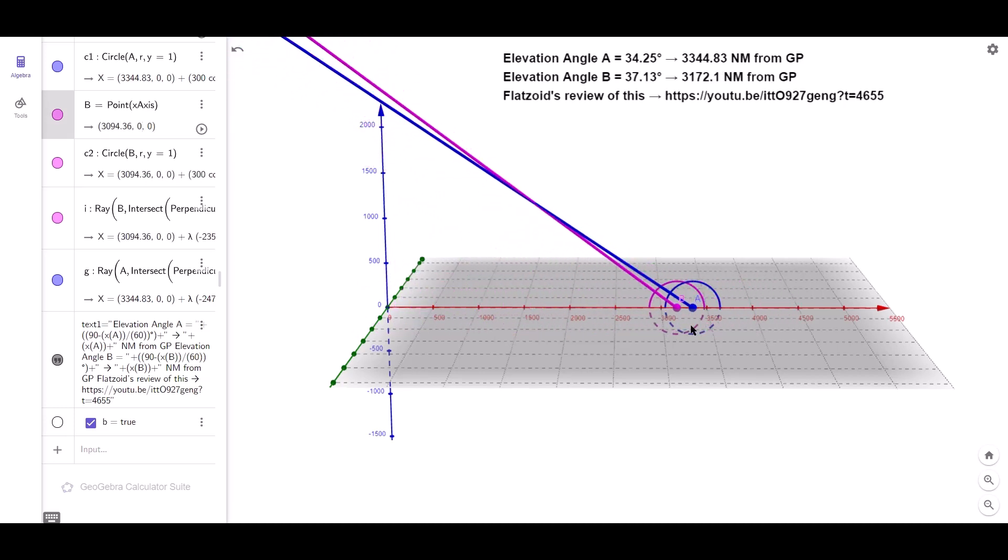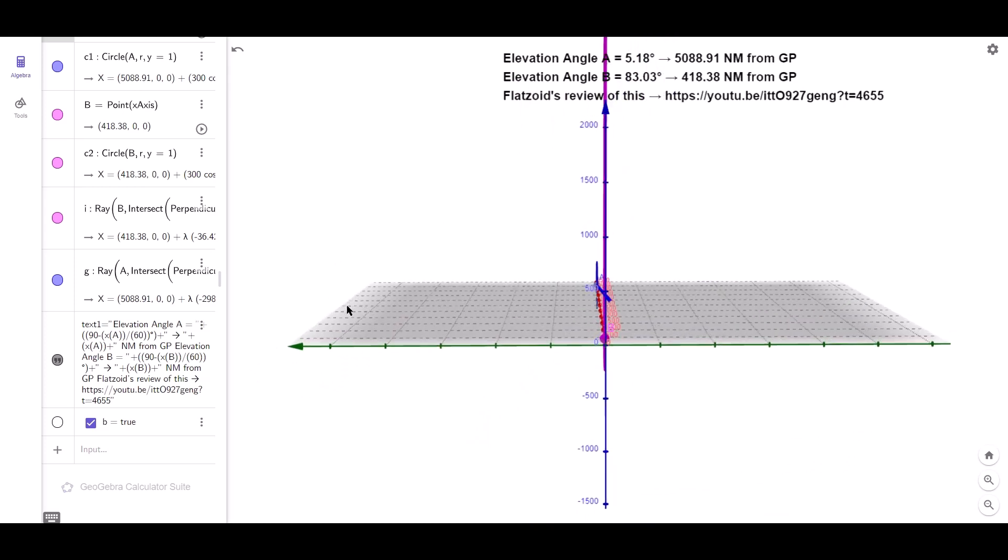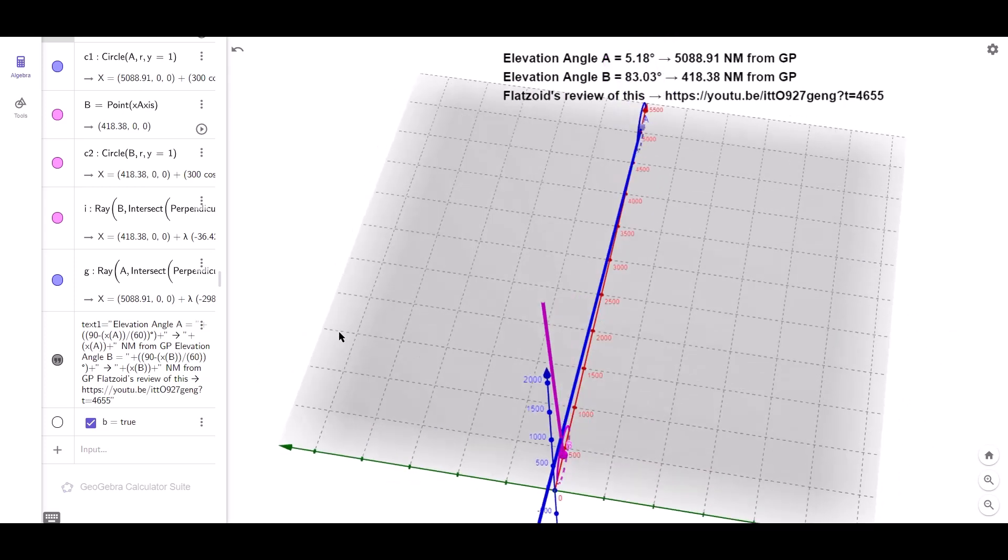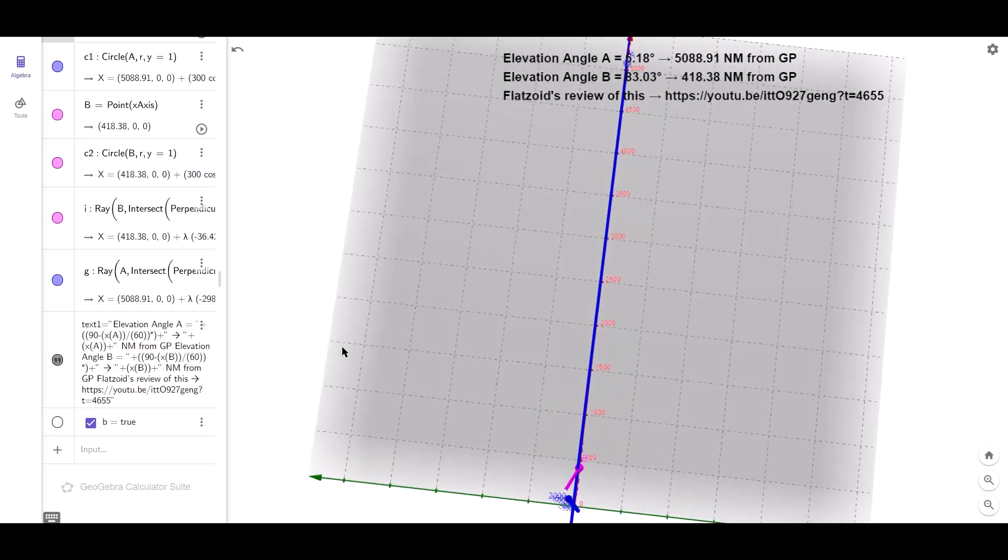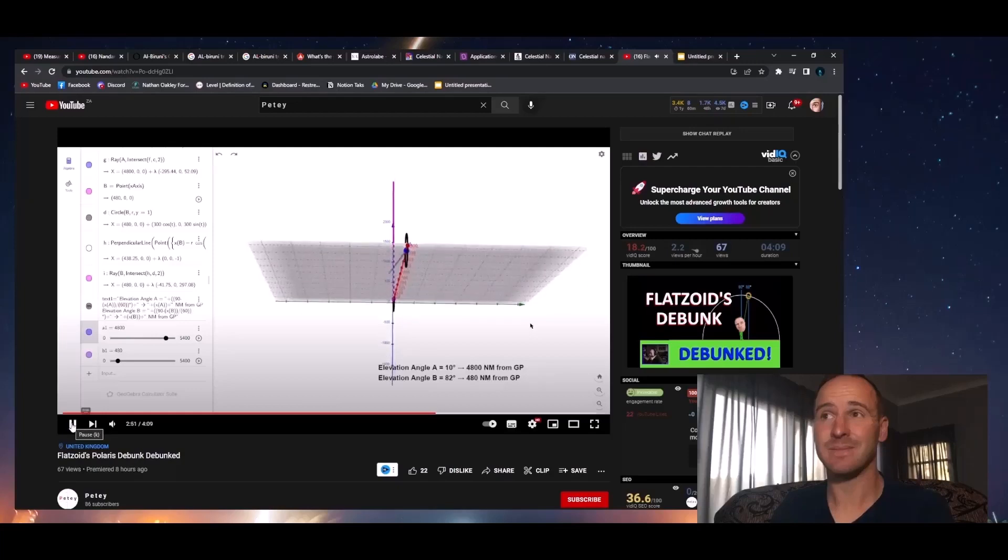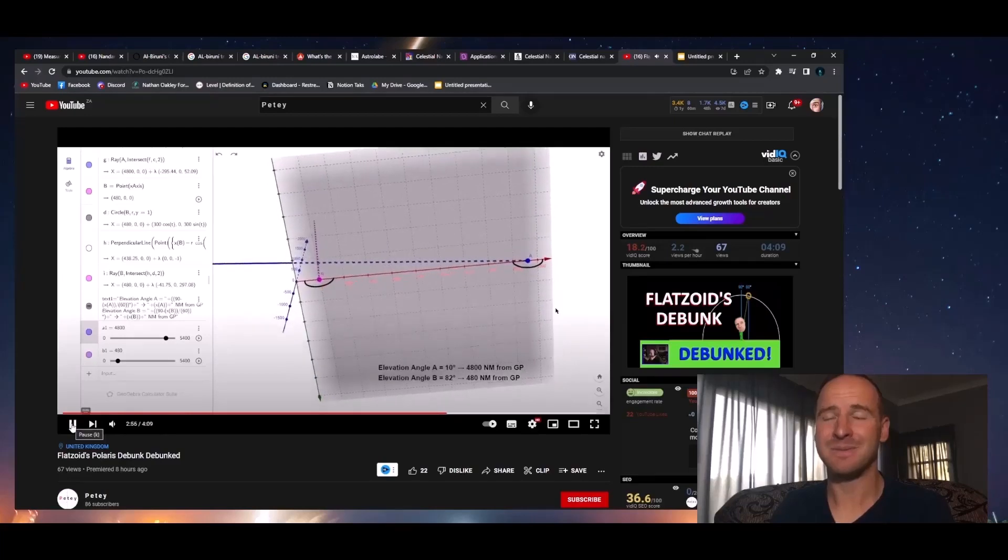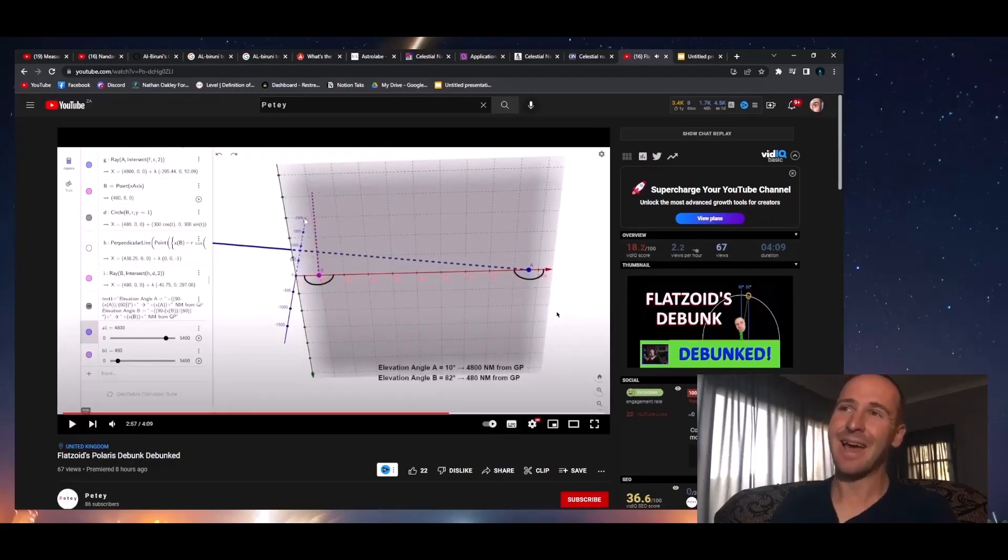So then I asked, how is it that Polaris seems to be in two places at once? It's all the way down here for Mike and it's all the way up here for Michelle. Really really low down, but Michelle sees it really really high.